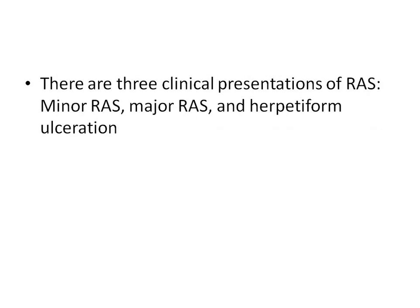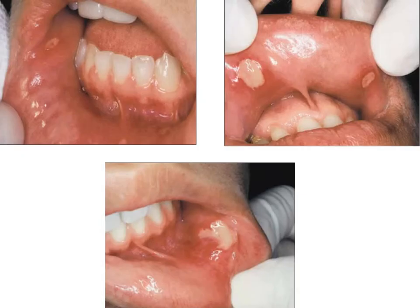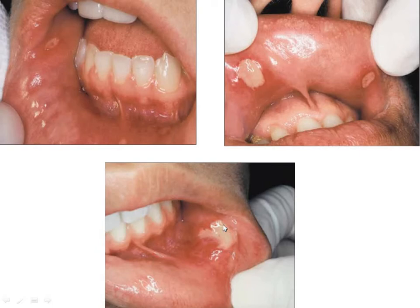There are three clinical presentations of recurrent aphthous ulcerations: minor aphthous ulcer, major aphthous ulcer, and herpetiform ulcerations. The first picture shows a small ulcer — this is minor aphthous ulcer. Major aphthous ulcer has a size greater than 10 mm, while minor is less than 10 mm. The third type, though appearing large, is irregularly shaped — it is formed by the collision of two, three, or four minute ulcers.